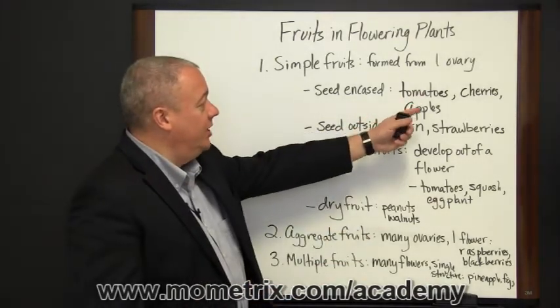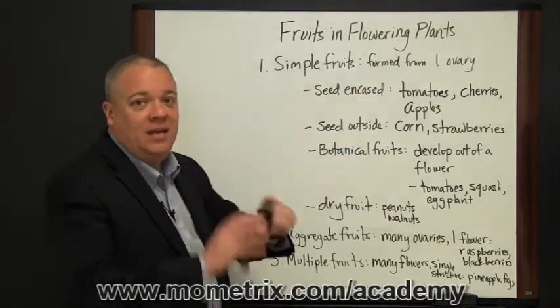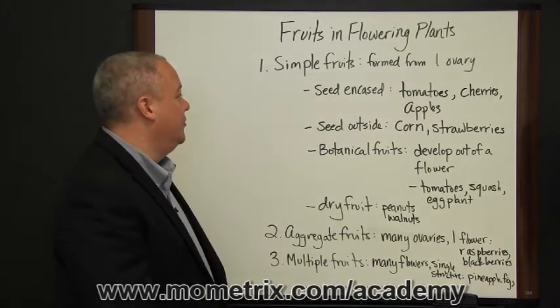Things like tomatoes, cherries, and apples are examples of simple fruits, one ovary, with the mature seed encased by the fruit.